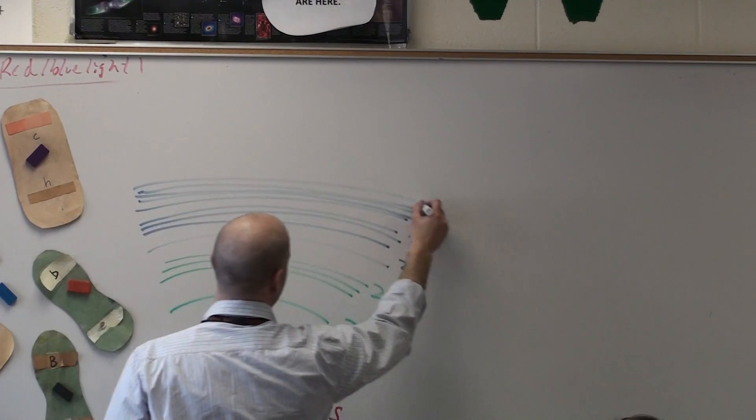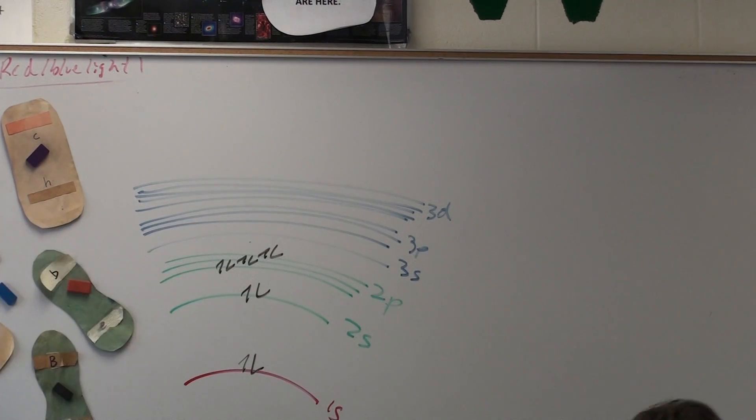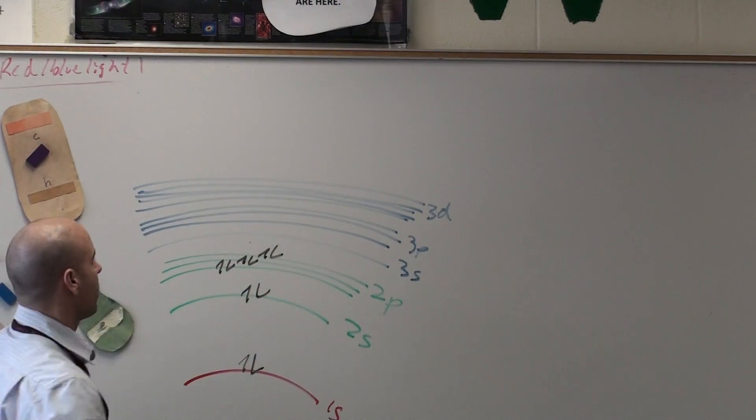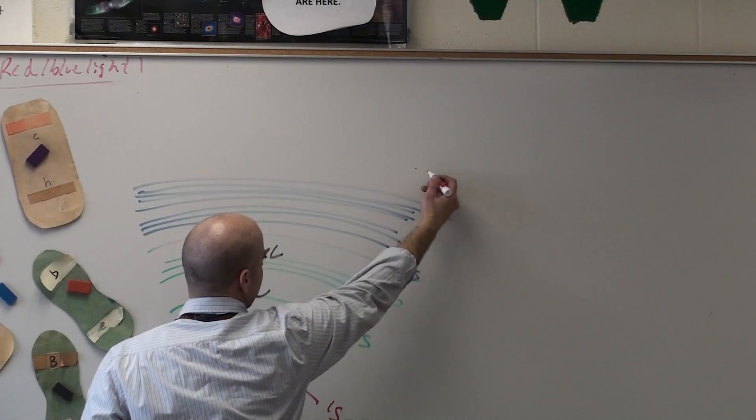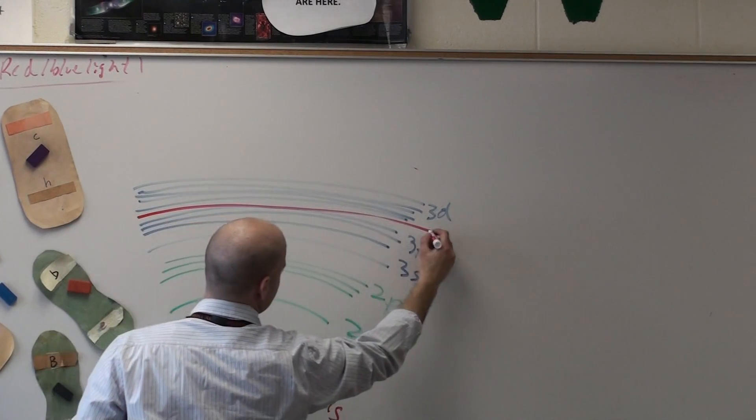How many d's are there? Five. And everything would be wonderful if everything was as nicely spaced as this. But something bad happens when you get to the 4th energy level. The 4th energy level overlaps with the 3rd. So instead of the 4s starting up here, the 4s actually starts right here.